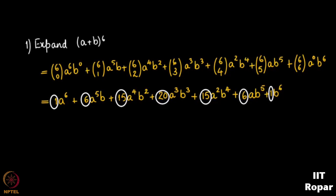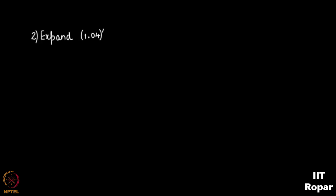Now let us go on to the next question: expand 1.04^4. You might be thinking this is very simple to calculate on a calculator, but let us see the beauty of binomial theorem. We write 1.04^4 as (1 + 0.04)^4, which is now in the form (1 + x)^n, and we can directly apply the formula.